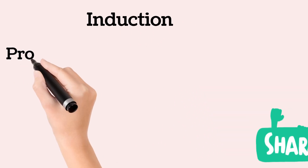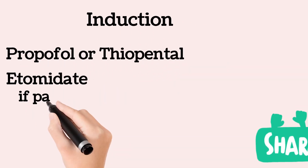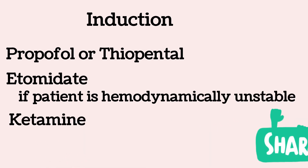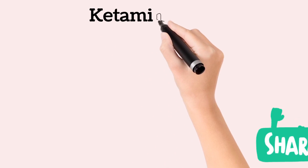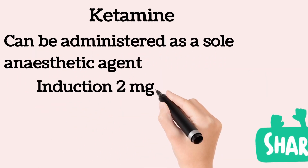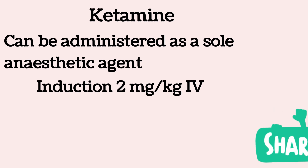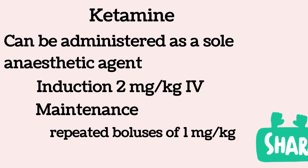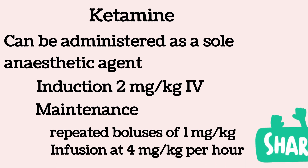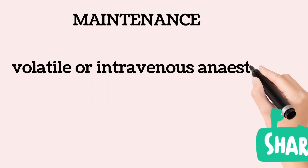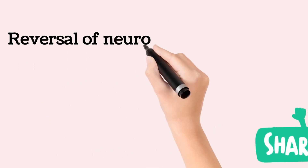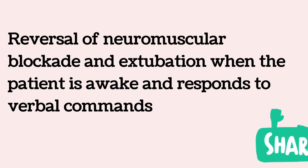Induction may be done with propofol or thiopentone. If the patient is hemodynamically unstable, etomidate is preferred. Ketamine may also be used and can be administered as a sole anesthetic agent, with maintenance by repeated bolus of 1 mg/kg or infusion at 4 mg/kg/hour. Anesthesia is maintained with volatile or intravenous anesthetic agents. Reversal of neuromuscular blockade and extubation are performed when the patient is awake and responds to verbal commands.